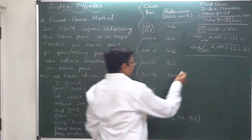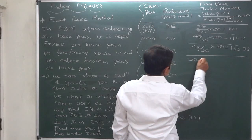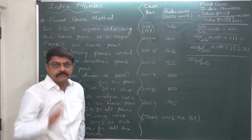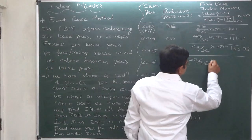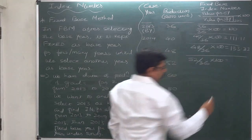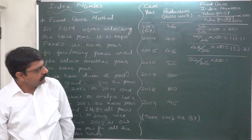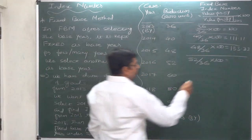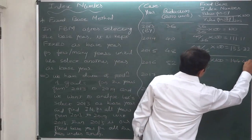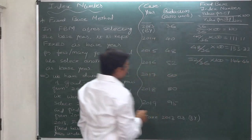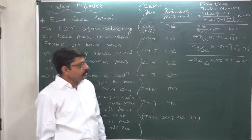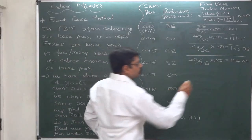Let's calculate for 2016. The value for the current year is 52, the value for the base year remains 36 (fixed base), multiplied by 100. That gives 52 divided by 36 into 100, which equals 144.44. This means in the year 2016, production was 44.44 percent more than the production in 2013.